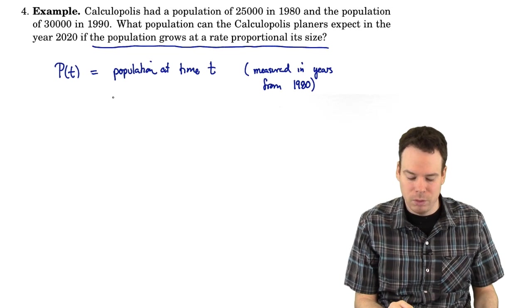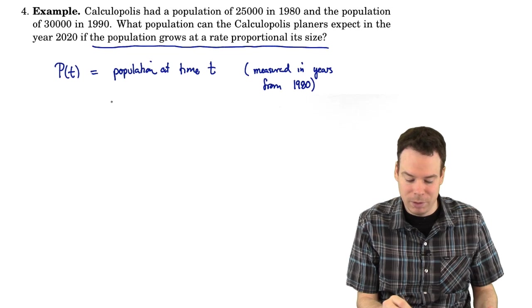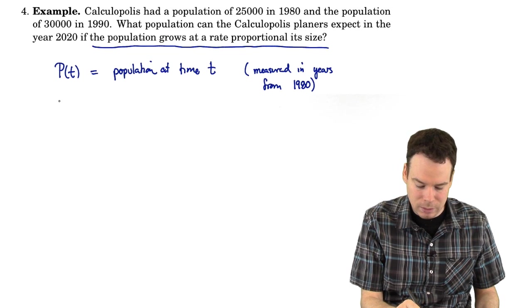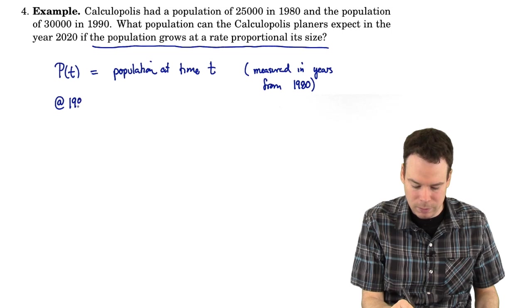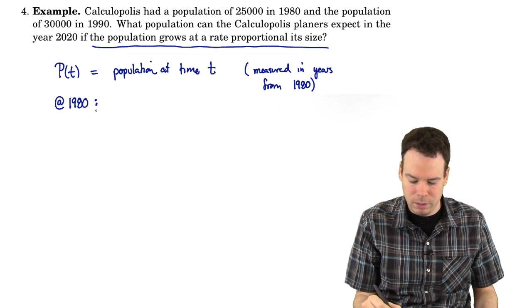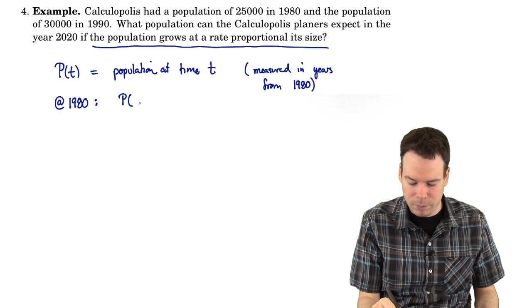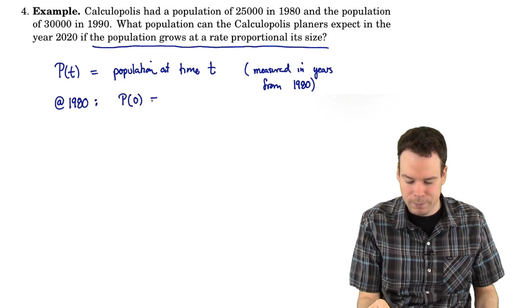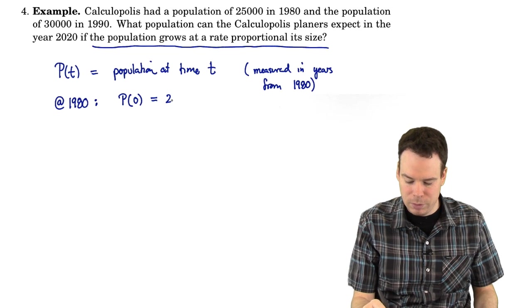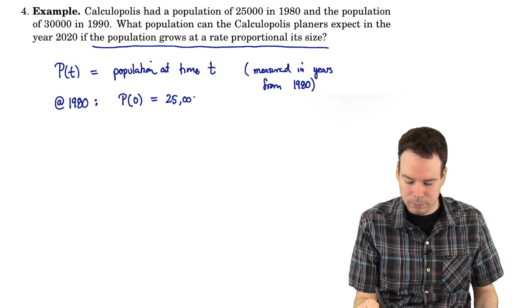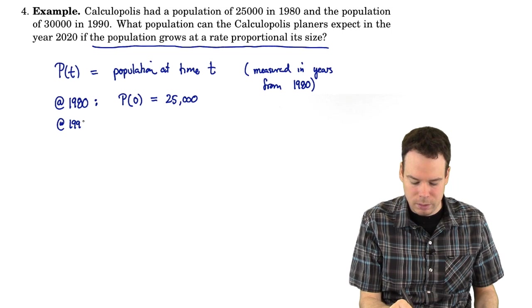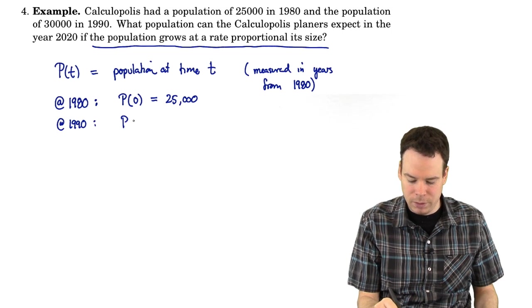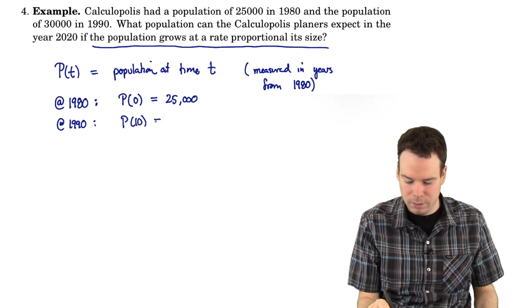What do we know about the population? We know that at 1980, that's population at time zero, and we know that value to be 25,000. We have some information about 1990. We know that the population, 10 years later, is 30,000.